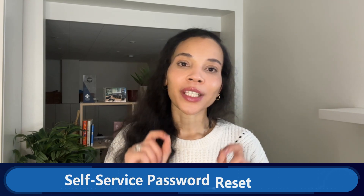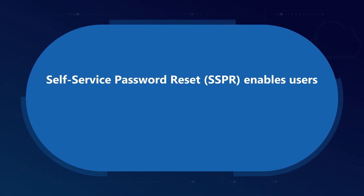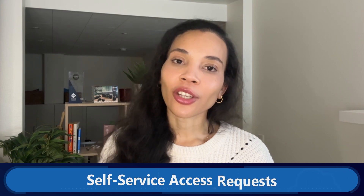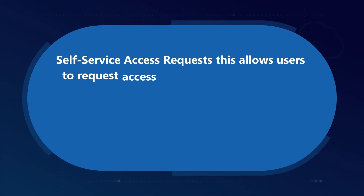Let's look deeper at how self-service can be implemented effectively and securely. First is self-service password reset (SSPR), which enables users to change or reset their passwords through a secure, automated process. This typically involves identity verification steps like answering security questions, receiving a verification code via email or SMS, or using an authentication app. You can set up SSPR by configuring security questions, mobile phone, and email verification methods. Users register for SSPR when they first log in, and when a user forgets their password they can follow the SSPR process to reset securely without needing to contact IT at all.